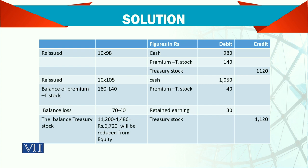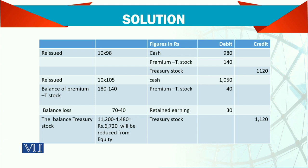The difference is split in two portions: one goes against the premium account and one goes against retained earnings. This is all part of shareholder equity. But remember, when you reissue, you will record no profit — it stays within equity. The total trade stocks balance outstanding is reduced from equity. The balance of Rs. 6,720 will be reduced from equity — it is always shown as a minus. This will not be shown in assets. Thank you very much.